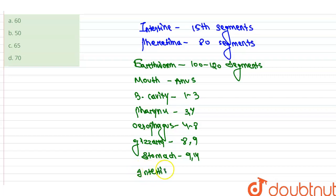So the answer will be what? The pheretima has 80 segments given, and the intestine starts from the 15th segment. So 80 minus 15, then the answer becomes 65. So our answer is option C, that is 65. All the other options are eliminated.